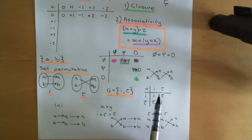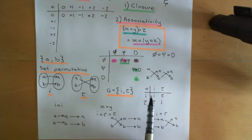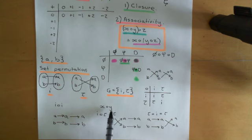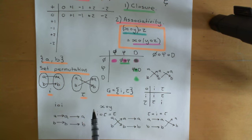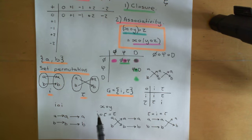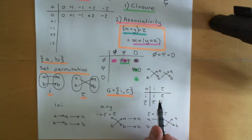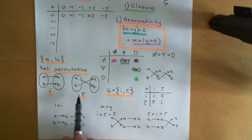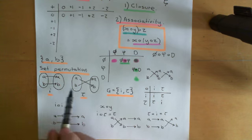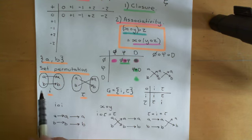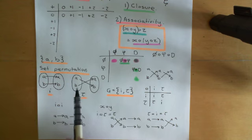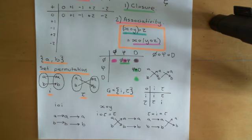I've defined the composition law on this set: it's basically which set permutation you end up with when you compose two set permutations together. An arbitrary x composed with an arbitrary y means firstly do the set permutation y, and then do the set permutation x. Combine them together — what's the net set permutation? That's your answer.